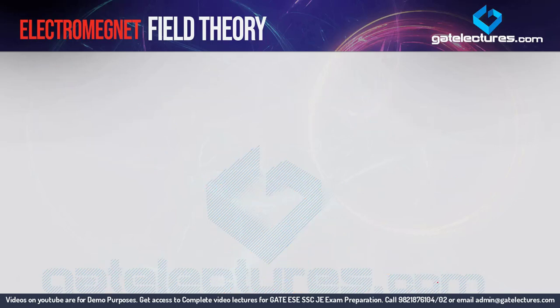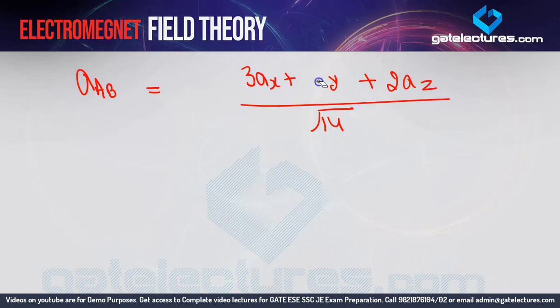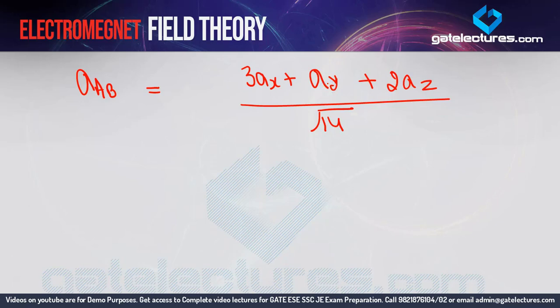If you want, you can also calculate the unit vector of this distance vector. The unit vector = (3ax + ay + 2az) / √14. And the amplitude is √14. So the unit vector of R_AB is (3ax + ay + 2az) / √14. The calculation is very easy, nothing too tough.